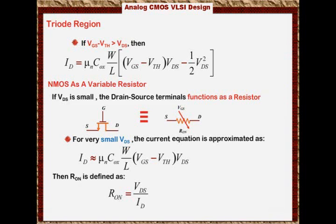VDS over ID is RON. And when you do the substitution of the current equation in VDS, you can see that the VDS on the top cancels the VDS on the bottom. So what you have is